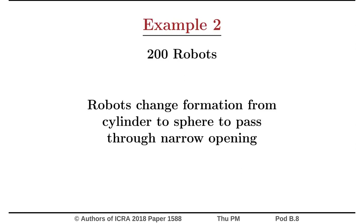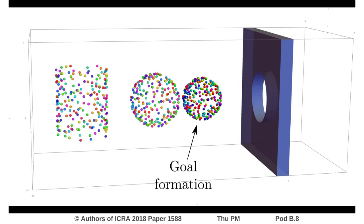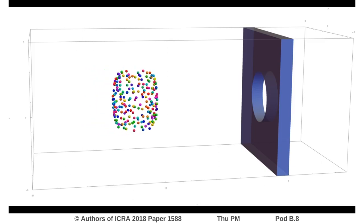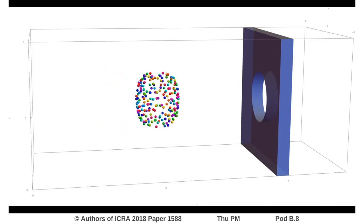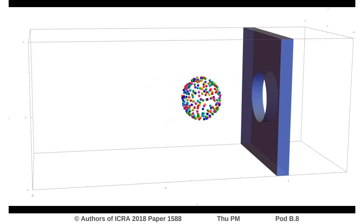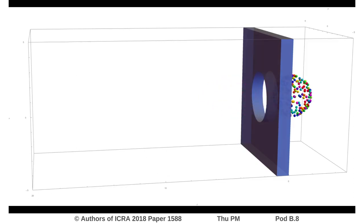In the second example, we have 200 robots in a 3D environment. The robots are initially arranged in a cylindrical formation and we want to move them to a spherical formation so that they can pass through the circular opening in the wall. The scale parameters and the location parameters are constrained to ensure the formation does not collide with the wall. We solve for the optimal parameters while ensuring that these constraints are satisfied.